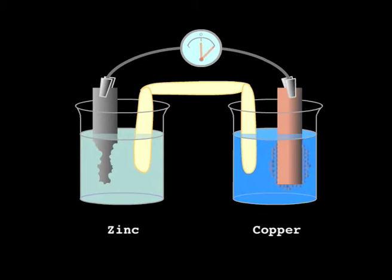We've already seen what happens in a zinc-copper cell. The zinc strip is eaten away, while copper is deposited on the other electrode.